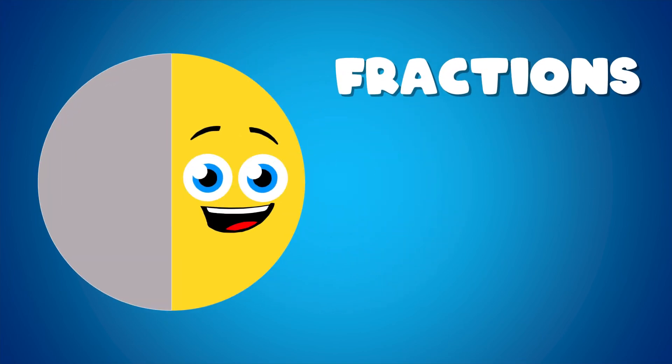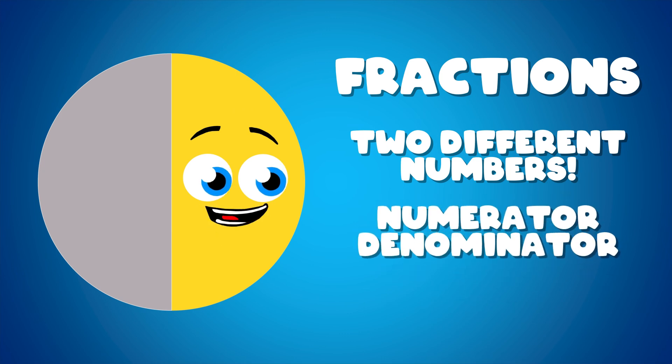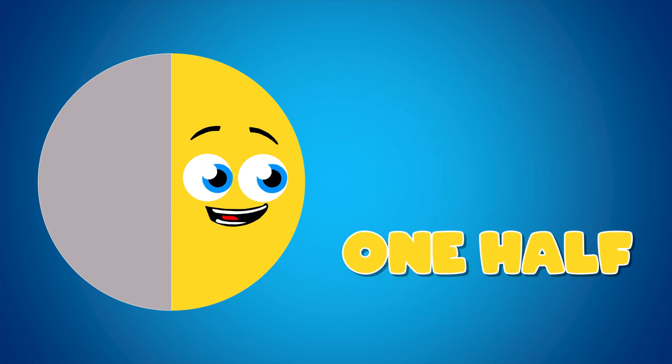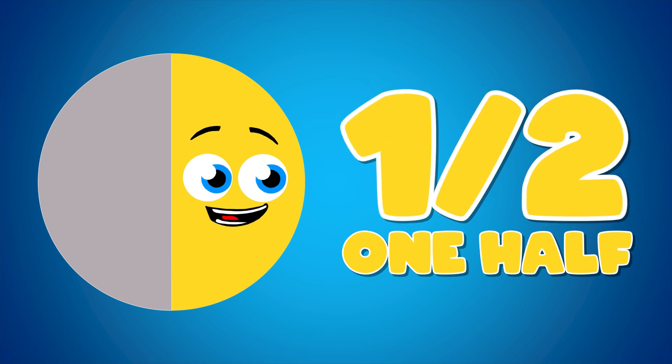Fractions are parts represented by two different numbers, the numerator above and the denominator under. For example, if you have one half, this is what it looks like. You've got one of the total two pieces, that's right.